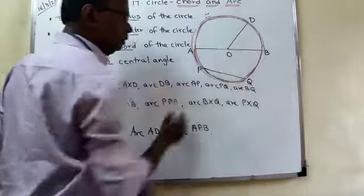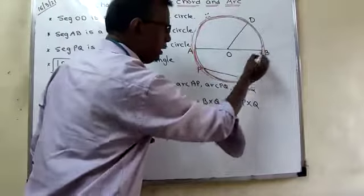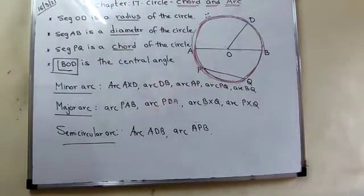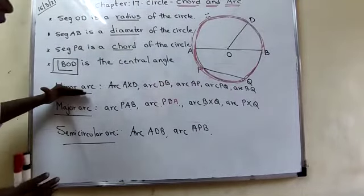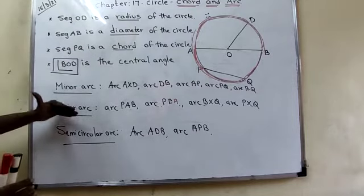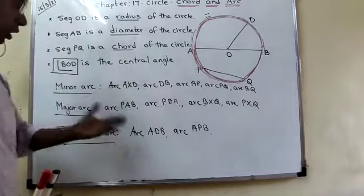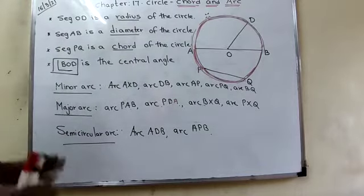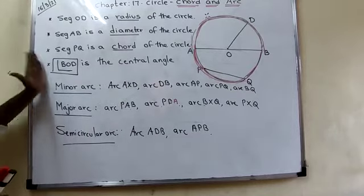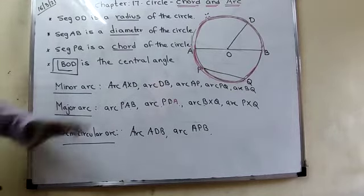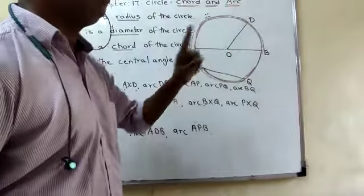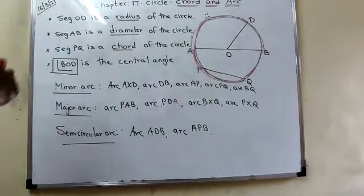Arc APB or arc AQB — they are called semicircular arcs, exactly 180 degrees. Minor arc means the measure is less than 180; major arc means the measure is more than 180; semicircular arc means the measure is exactly 180. This is important for your 9th and 10th standard. The total measure of a circle is 360 degrees and a semicircular arc measures 180 degrees. Students, write this down.